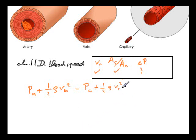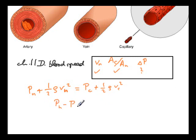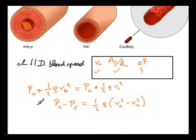The constricted flow will be faster due to the equation of continuity — when you have a constriction, fluid flows through faster. Keeping the velocities on the right and pressures on the left gives a positive result. So: P_n minus P_constricted equals one-half times the density of blood times (V_c squared minus V_n squared). This difference is delta P.